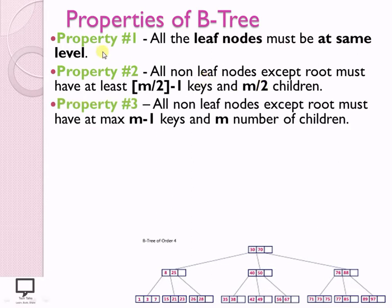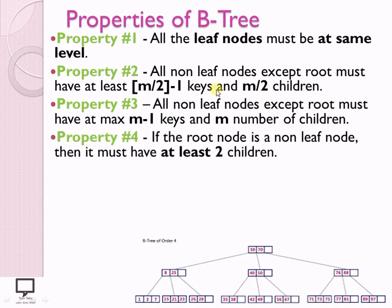Property 3 deals with the maximum number of keys and maximum number of children. If M is the order — order is decided by the number of children — so if M number of children are there, M-1 number of keys, which is one less than M number of children. This is the maximum keys that can be there if the non-leaf node is not a root node. Next property is with respect to the root node. If the root node is a non-leaf node, it must have minimum one key and at least two children. So till this I have explained about all internal nodes — non-leaf but not root — and root which is a non-leaf node.